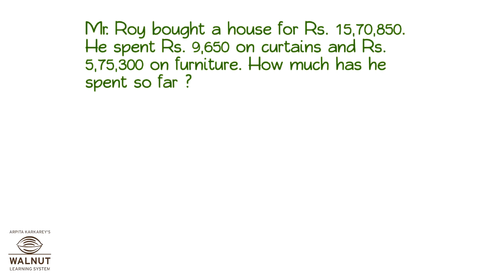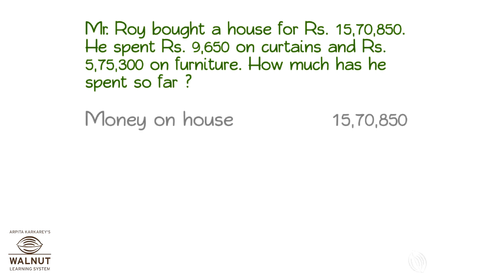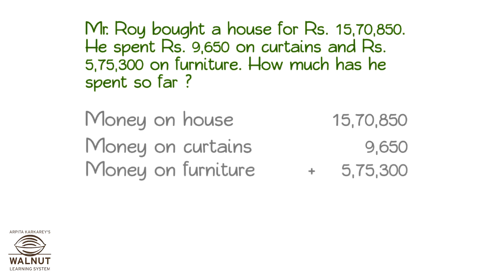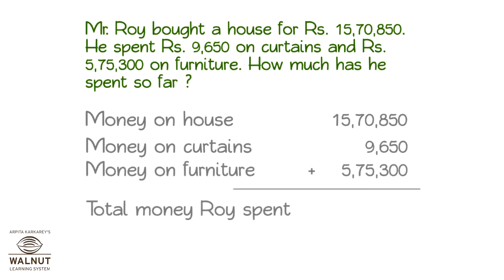What do we have to find out in this problem? We have to find the total amount spent by Mr. Roy — that means the sum of all the things that have been bought. We have to add up the money spent on the house, curtains, and furniture. That gives us the total money that Roy spent.